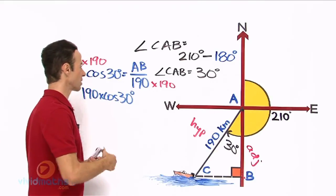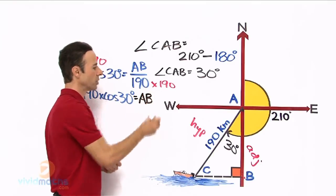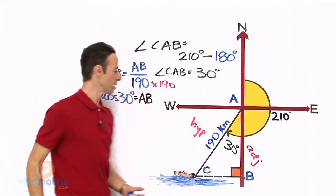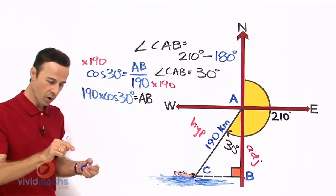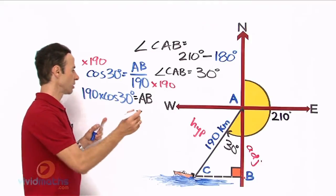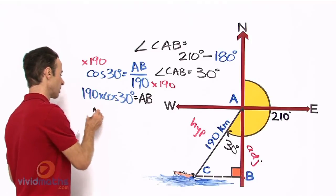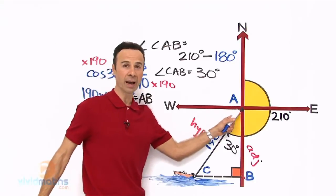Now that is going to yield 190 times cos 30 degrees is going to give us AB. AB, let us work this out. Put this in the calculator: 190 times cos 30 degrees equals.